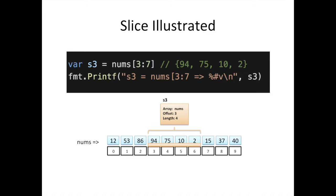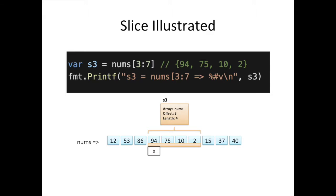When you create a slice — for example, starting at offset 3 and going up to index 7 — the length of that slice is 4. Once you create a slice of an array, it's like a projection or view into that array, so you only see part of it. The indexing looks very different from the array's own indexing because the slice is just a projection into the underlying array. There are elements before it and after it. You can't use a negative index, and you can't use an index greater than 3, because that would be out of bounds.